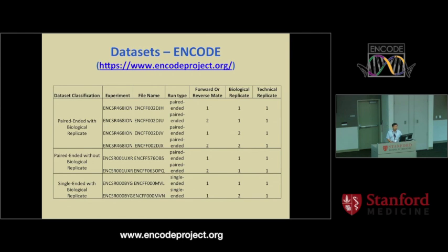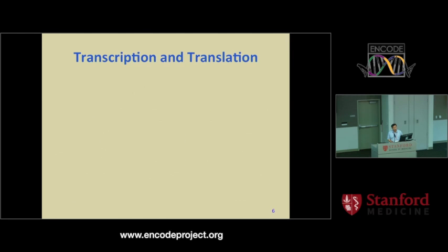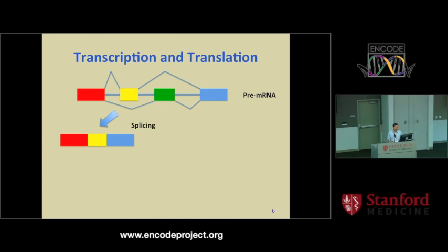The ENCODE dataset that I downloaded — from Tom's lab — has lots of cases that are not just single-end. It has paired-end reads and also lots of replicated samples have been performed. Alternative splicing means that from one gene, multiple mRNAs can be transcribed, and at the mRNA level those can be translated into different isoforms, which makes gene expression more complicated.